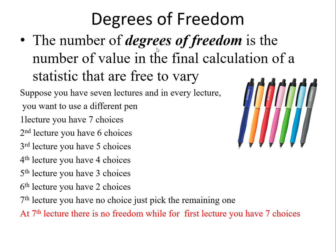I will discuss this definition with a simple example. Suppose you have seven different pens and you have seven lectures each day. You want to use a specific color pen for each and every lecture. For the first lecture, you can choose any of the seven: blue, yellow, red, pink, green, or gray. So you have seven choices — you can freely choose from all seven pens.